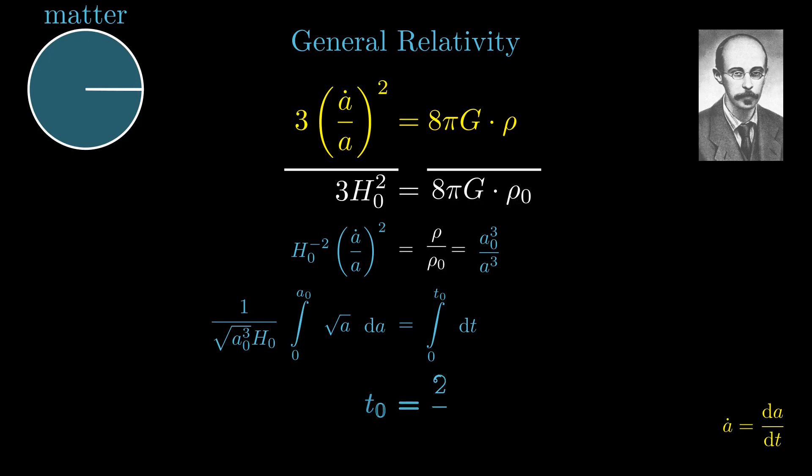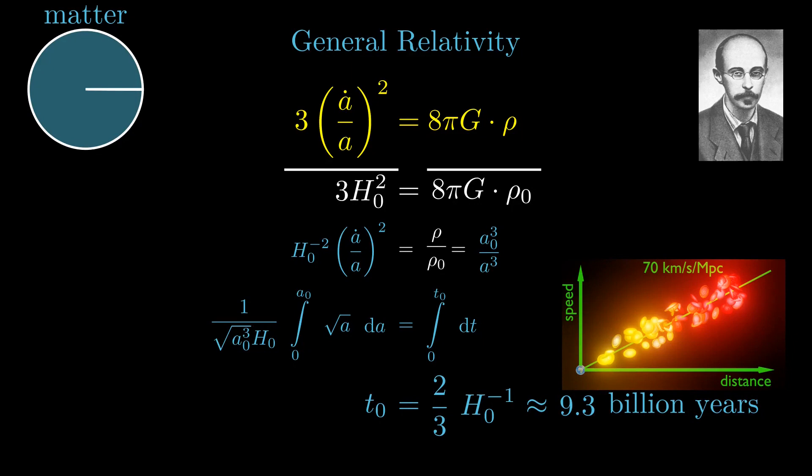Luckily, supernovae observations indicate that 70% of the matter-energy density of the universe is dark energy that is not diluted by the expansion of space. This modifies the right-hand side of Friedman's equation and it gives an age that is only little less than 14 billion years.